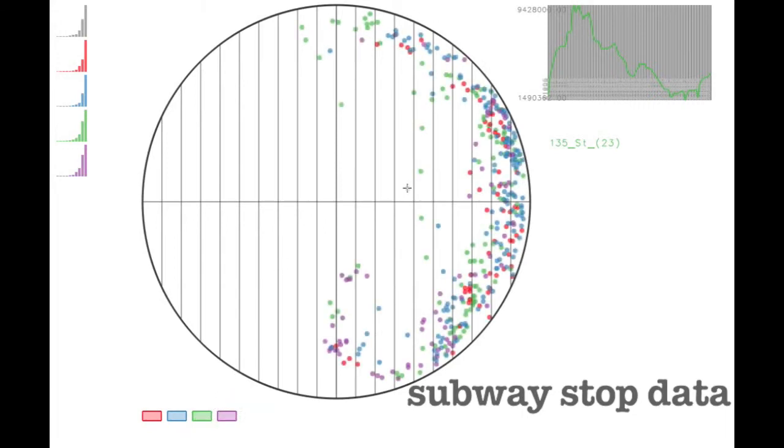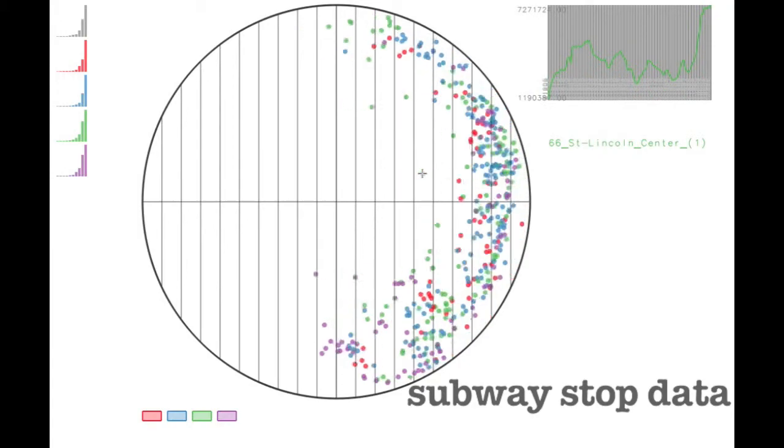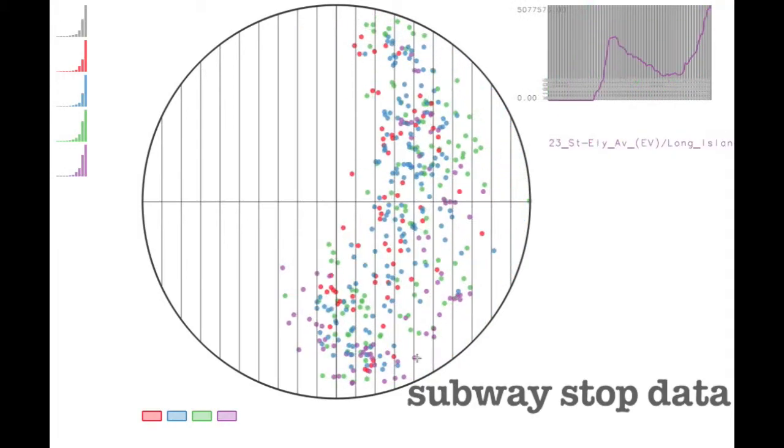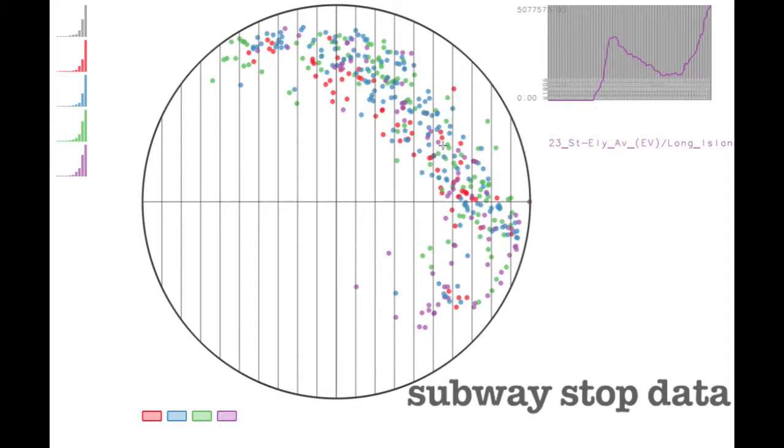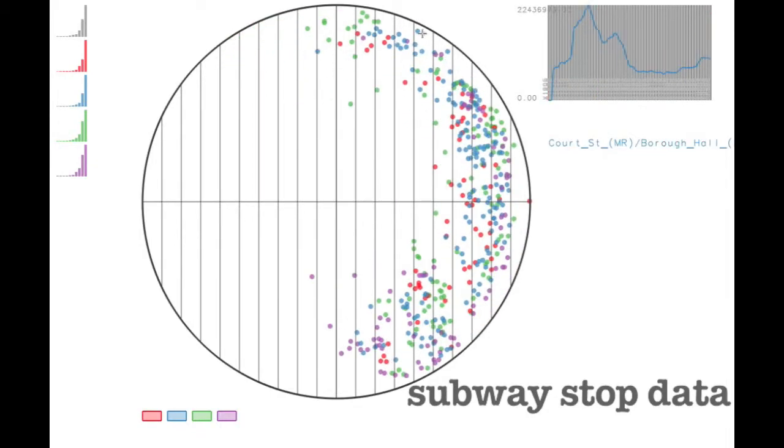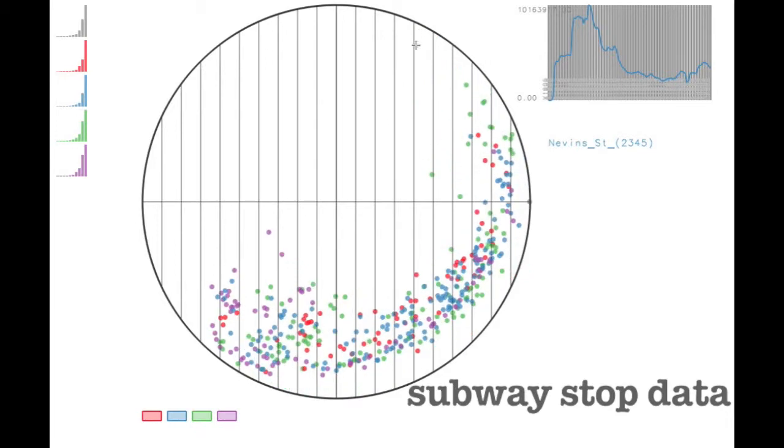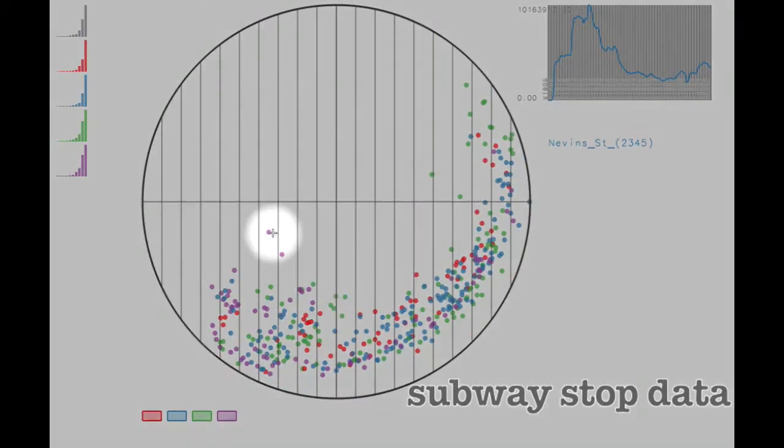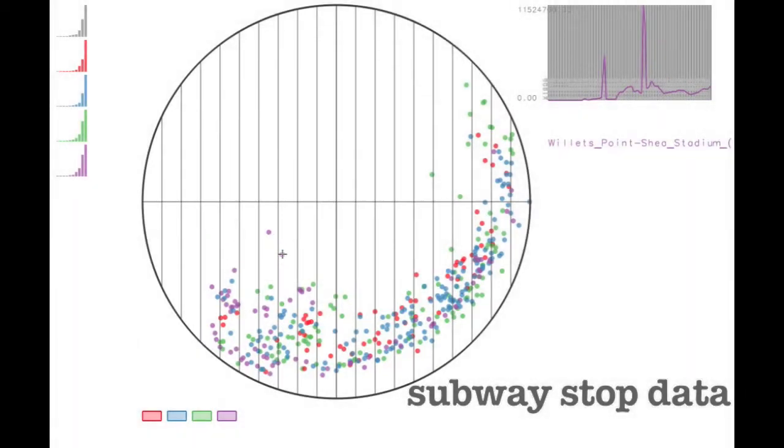Through animated projections, it is possible to find outliers among the subway stops, or stations which have different ridership than most other stations. In under a minute, it is possible to find the two strongest outliers in this dataset: the Aqueduct Racetrack and the Willits Point-Shea Stadium stop.